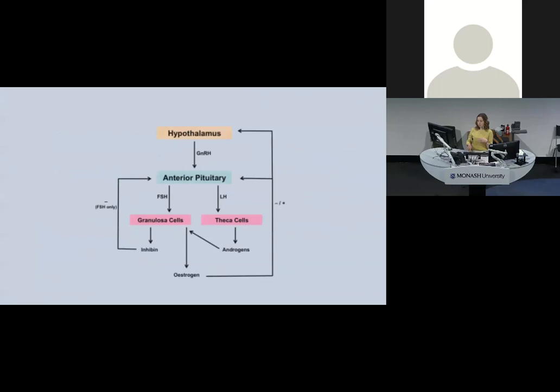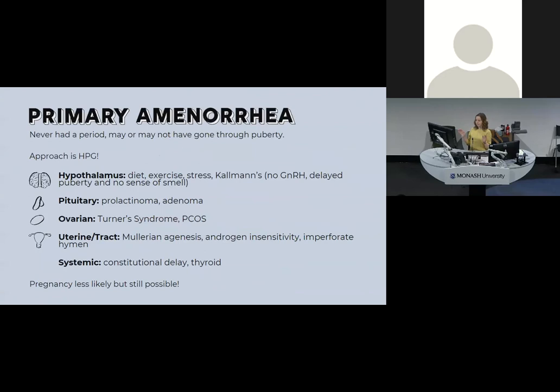For primary amenorrhea, use the HPG axis — very similar causes to infertility. At the hypothalamus: diet, exercise, stress, and Kallmann syndrome, which is absent GnRH and presents with delayed puberty and no sense of smell. Pituitary: prolactinoma and adenoma. Ovarian: Turner's syndrome and PCOS. For the uterine tract: Müllerian agenesis, androgen insensitivity syndrome, and imperforate hymen are all important differentials.